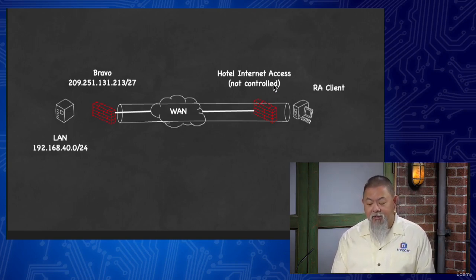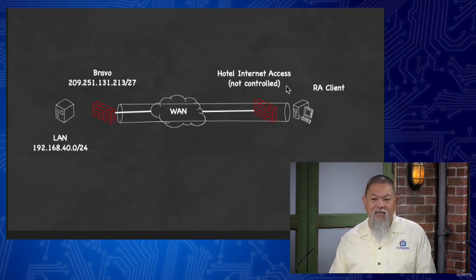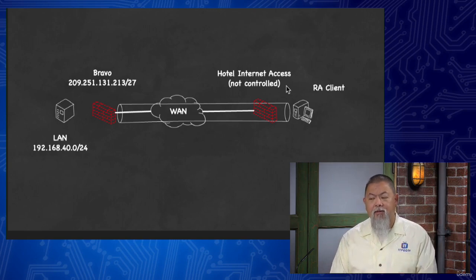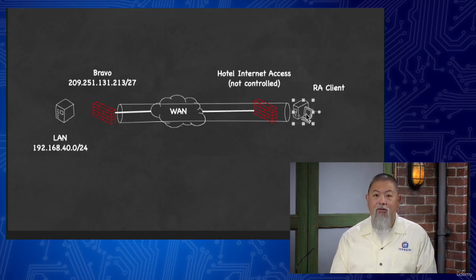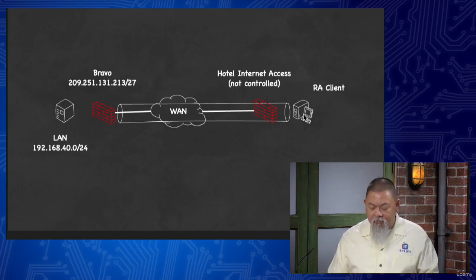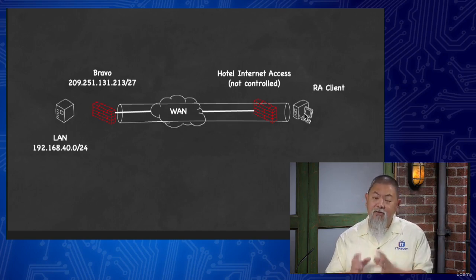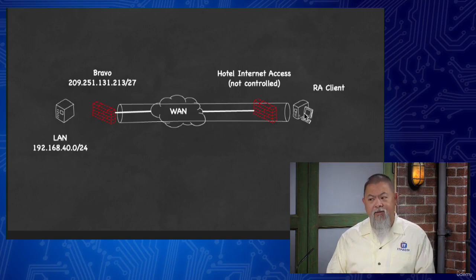Sometimes they call them 'road warriors' because they're constantly on the road — changing IP addresses from hotel to hotel or from conference room to conference room. They're changing all those different network connections, but they still need access to regular network resources. If you're connecting over something like hotel internet access — a network you do not control — you don't want them making a connection back into your network through that uncontrolled medium. So instead, you bring up what we call an RA client, or remote access client, which establishes that VPN tunnel between your site.